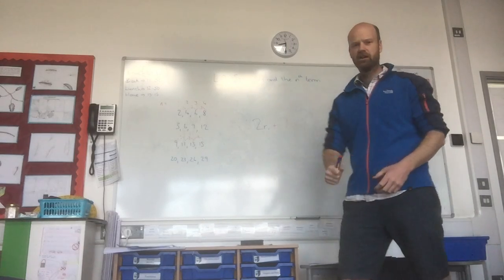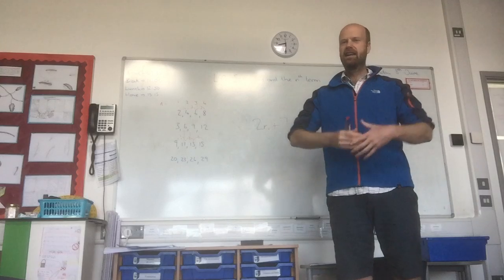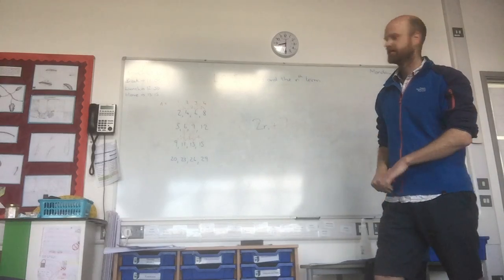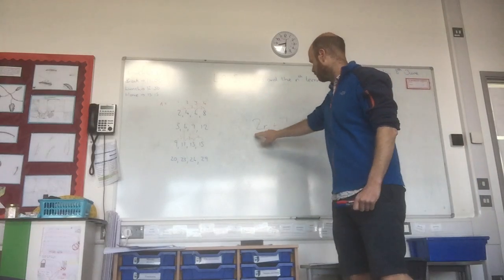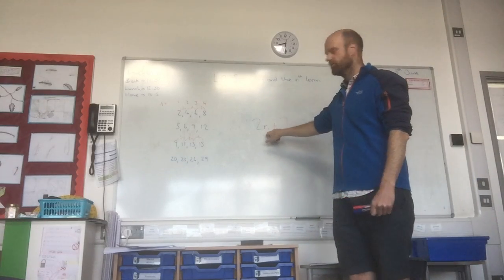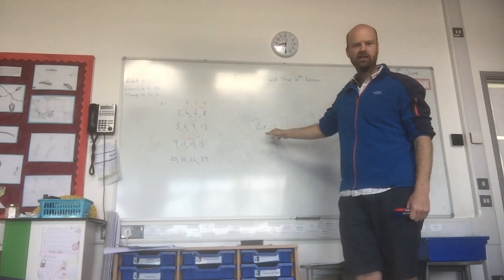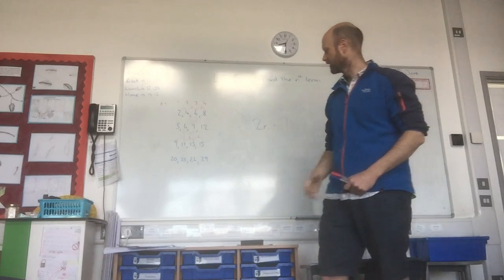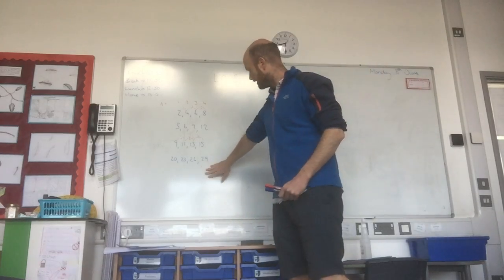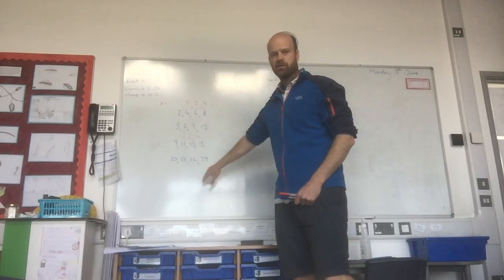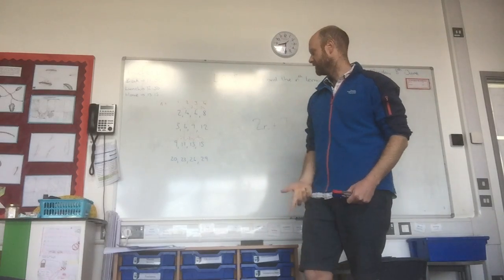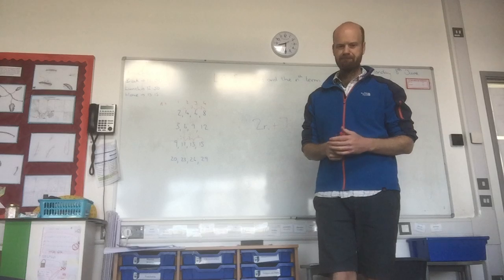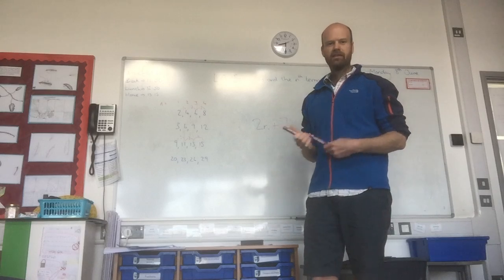I could use that to work out any number. The 457th number in that sequence would be 2 times 457 plus 7. Down here, likewise, we've got 20, 23, 26, and 29.